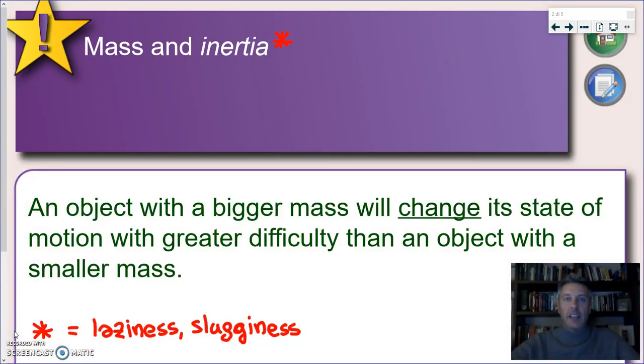It is everyday experience that if we have an object with a big mass, it is difficult to move it if it is not moving. Even if it is on wheels, even if you try to decrease as much as possible the friction with the ground, it is always very difficult to put it into motion. It is also very difficult, once that object is moving, to stop it from moving. In general, we can say that an object with a bigger mass will change its state of motion with greater difficulty than an object with a smaller mass.